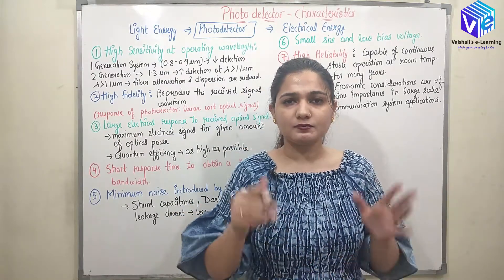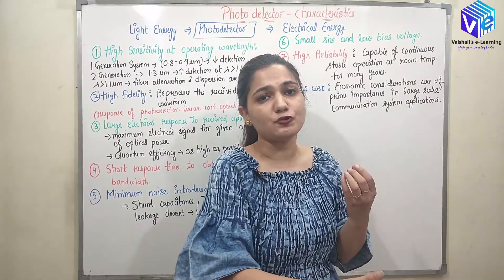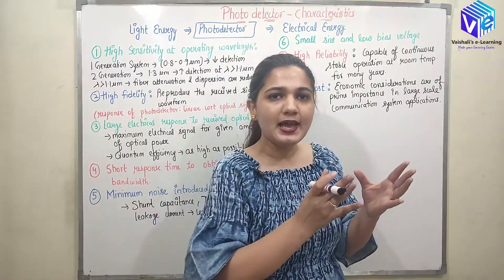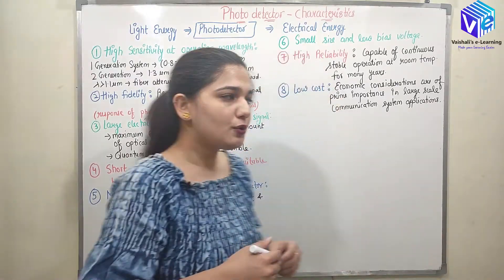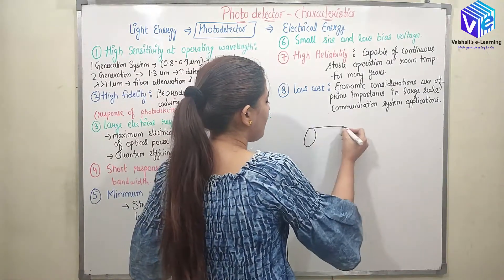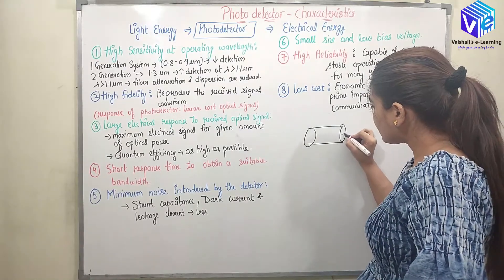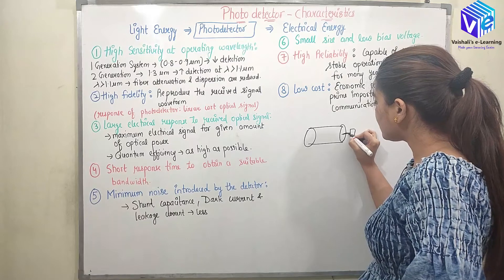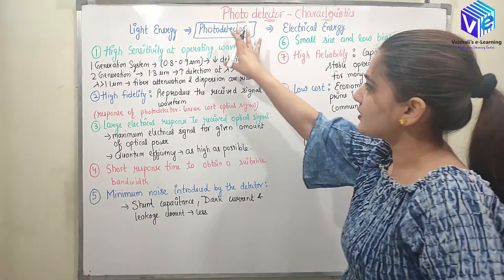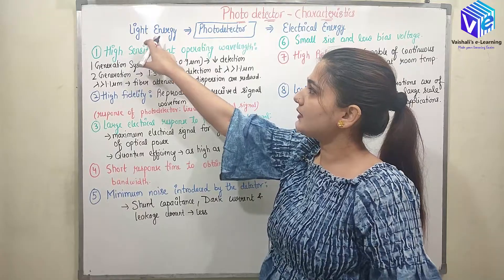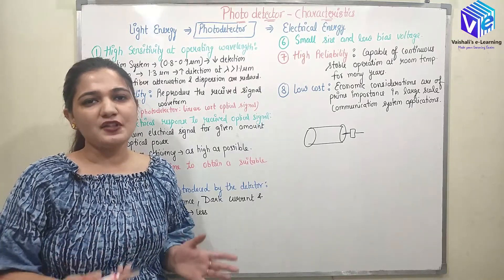What is a photodetector? A photodetector is a device which is detecting the light output and giving me electrical output. So, it is taking the light as the input and giving me the electrical signal as the output. The light coming from the optical fiber — the photodetectors are present at the receiving end, and they convert this light into the form of an electrical signal. The function of the photodetector is converting light energy into electrical energy. This is the basic and simplest operation of the photodetector.